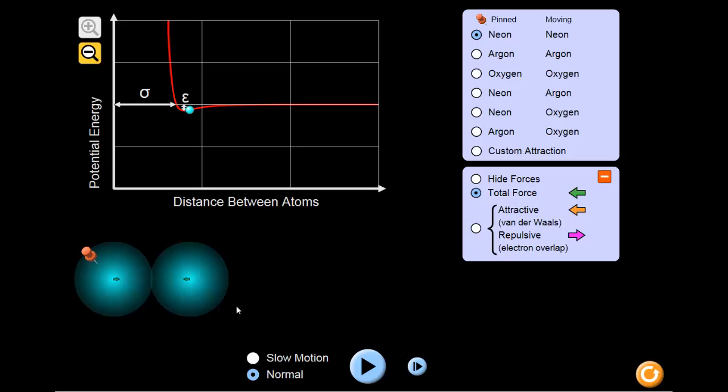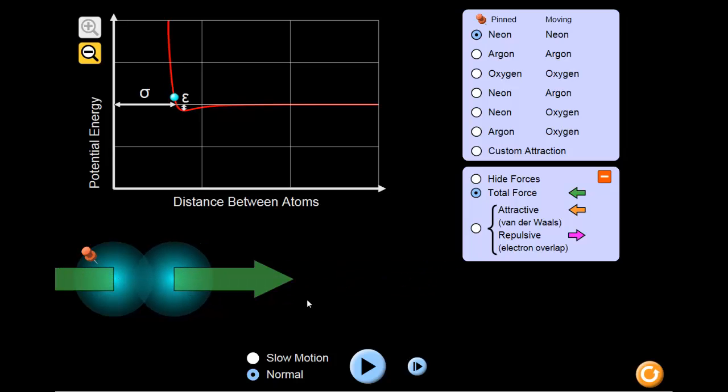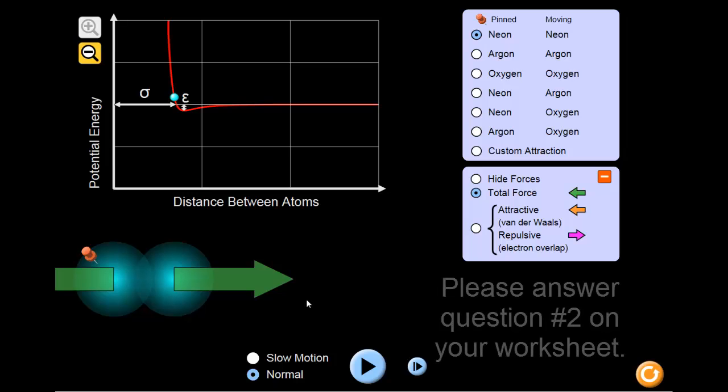Now we'll take a look at what happens when the two atoms are very close to each other and are overlapping. Looking at the green arrows, is there now an attractive or repulsive force? Take a second to answer the question on your worksheet.